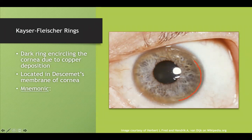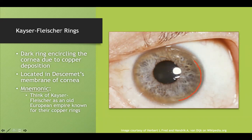A mnemonic for Kaiser-Fleischer rings: Kaiser-Fleischer sounds like some old European empire, almost like the Austrian empire. I always assume they're known for their copper rings and all the wealth that comes with that. That's how I remember Kaiser-Fleischer rings are associated with copper deposition and that it's a complication of Wilson's disease specifically.